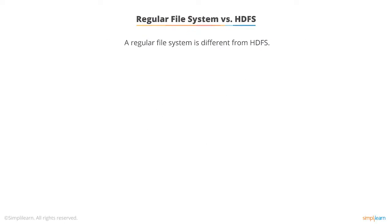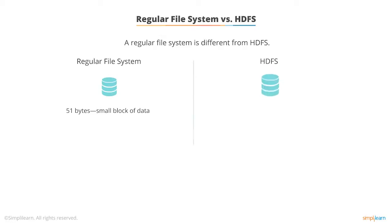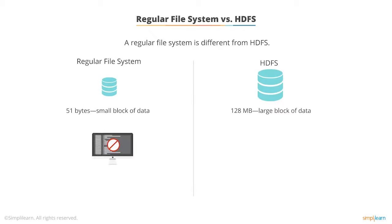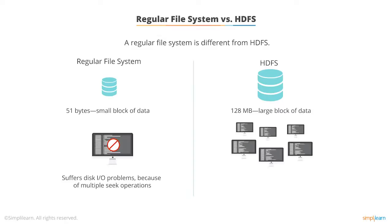A regular file system, like a Linux file system, is different from HDFS with respect to the size of the data. In a regular file system, each block of data is small, usually about 512 bytes. However, in HDFS, each block is 128 megabytes by default. A regular file system may suffer from disk input-output problems mainly due to multiple seek operations, whereas HDFS can read large quantities of data sequentially after a single seek operation. This makes HDFS unique since all of these operations are performed in a distributed mode.